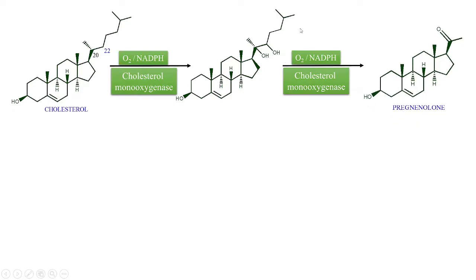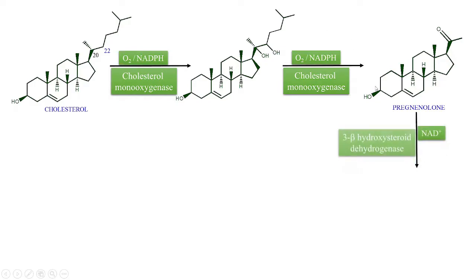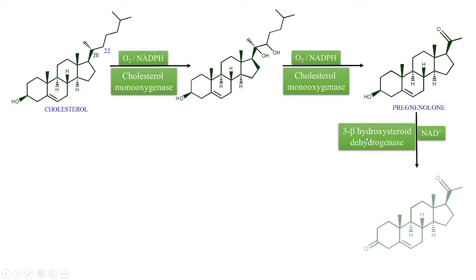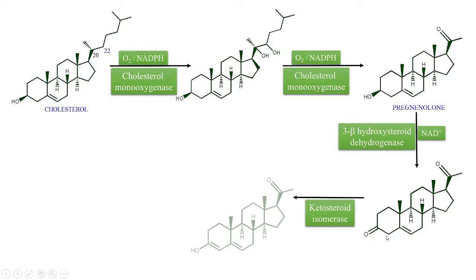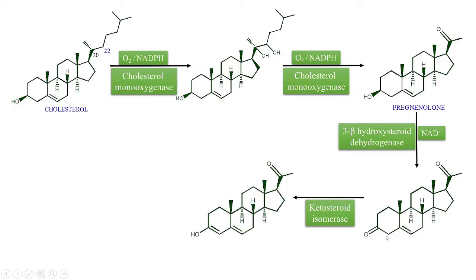Again, in the presence of NAD+ and the enzyme 3-beta hydroxysteroid dehydrogenase, we can see that this dehydrogenase has oxidized the position-3 secondary alcohol to a ketonic group. Next, in the presence of the enzyme ketosteroid isomerase, the ketonic group is converted to an enolic group — there is enolic group formation.